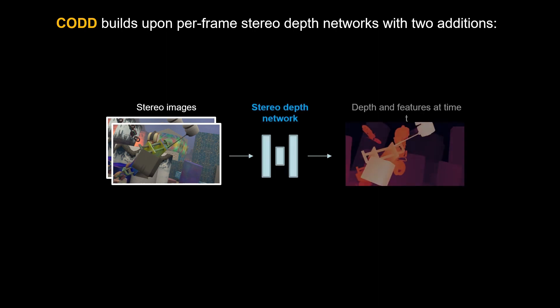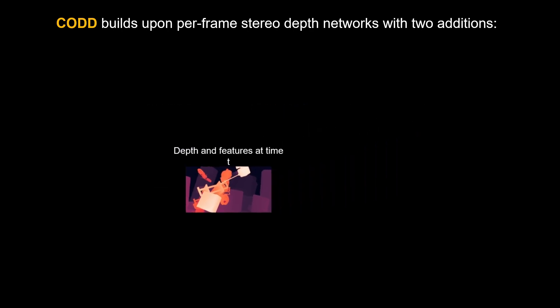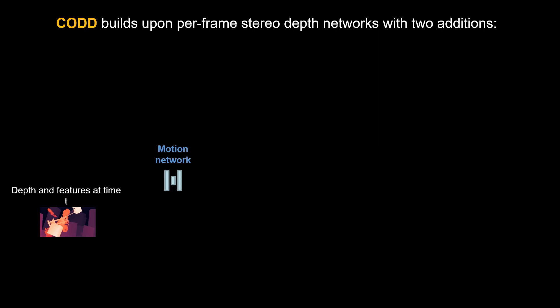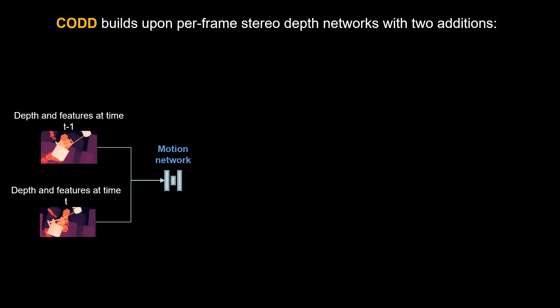How does COD work? COD builds upon stereo depth networks, which extract per-frame depth and features at each time point. For consistency, we introduce two additions. First is the motion network. The motion network takes estimates from both the current and previous time points as input, to regress per-pixel 3D motion.